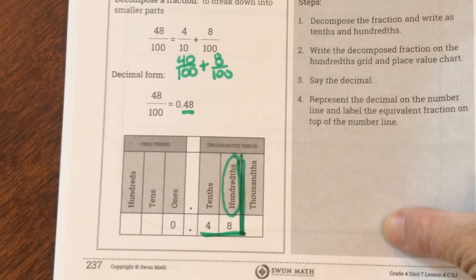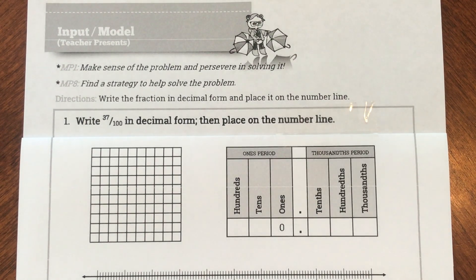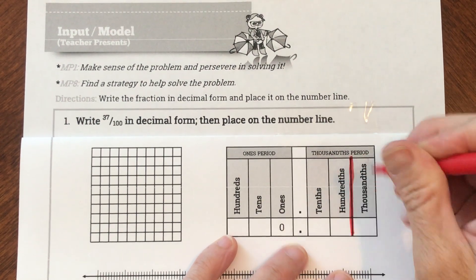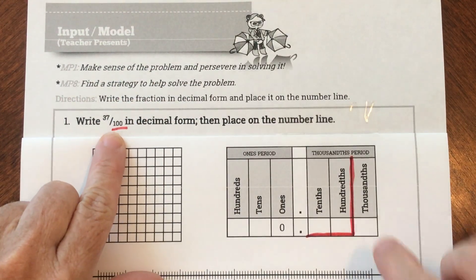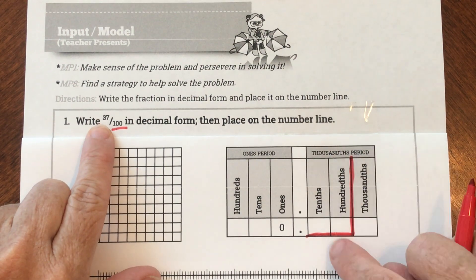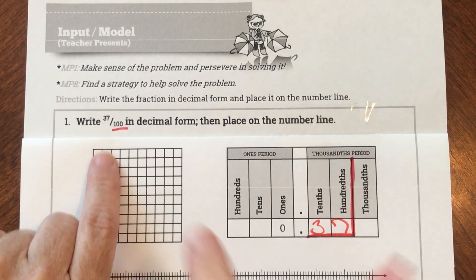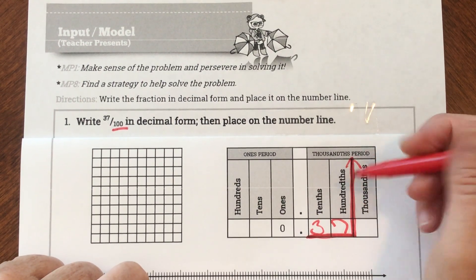Here is my first problem. It says write 37 hundredths in decimal form, then place on the number line. To write 37 hundredths in decimal form, I know that my last place value has to go to the hundredths — that's where I need to end. So I'm going to write my number 37 and it fits perfectly. The way I read this is 37 hundredths, and the way I read the decimal is also 37 hundredths — I say the last place value.